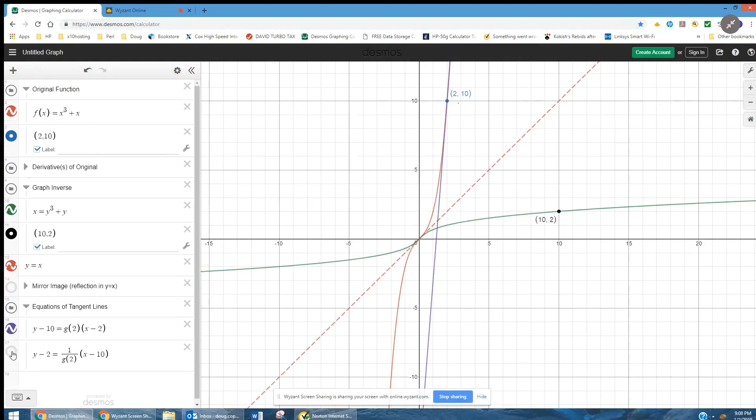And likewise, the equation for the tangent line at 10, 2 for the inverse function, 1 over g of 2 we've seen is 1 thirteenth. And that kind of proves that the formula is working. So I'm going to actually save this link to this.